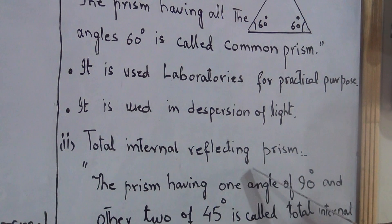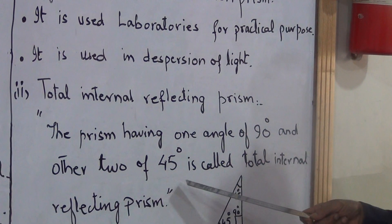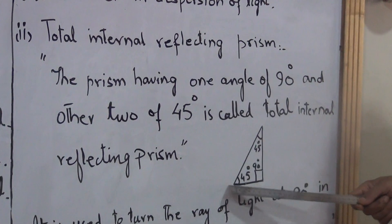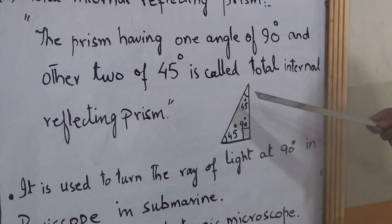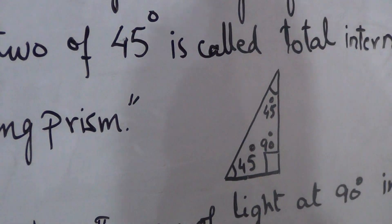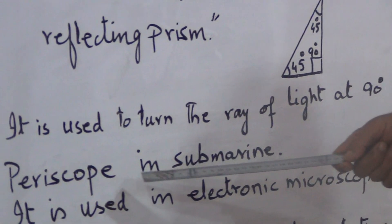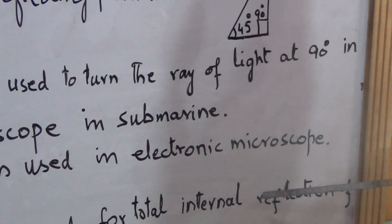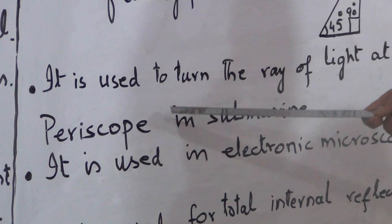Number two: total internal reflecting prism. A prism having one angle of 90 degrees and the other two of 45 degrees each is called a total internal reflecting prism. This angle is a right angle — 90 degrees — and the other two are 45 degrees each. It is used to turn the ray of light at 90 degrees in a periscope. A periscope is a device used in submarines to view the target on the surface or into the sea.